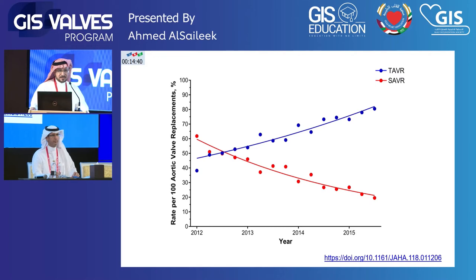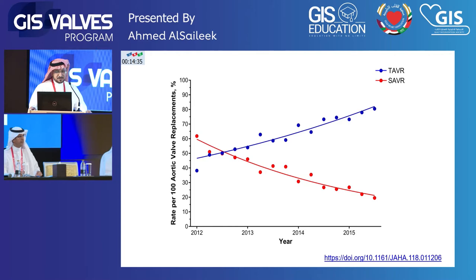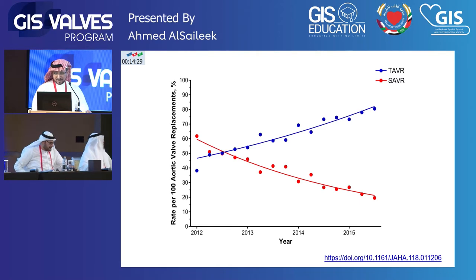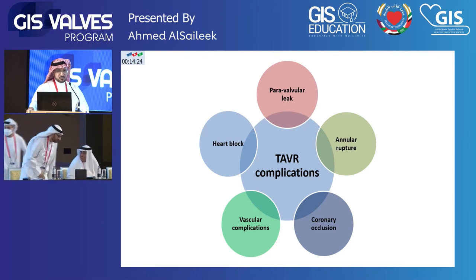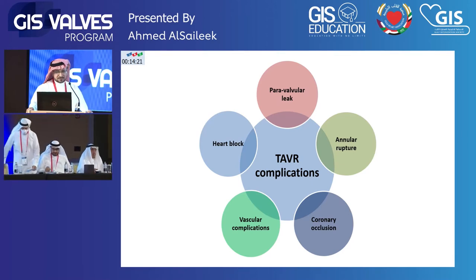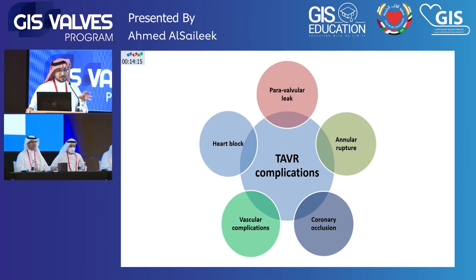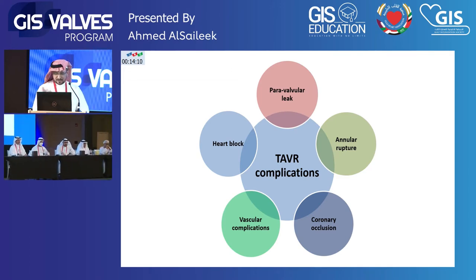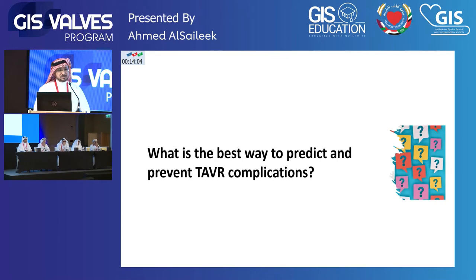There is an increasing use of transcatheter aortic valve replacement, and comparing to surgery, it is getting more and more prevalent than surgical replacement. Because it's an invasive procedure, it's expected to have some complications, either related to the landing zone — which is the aortic annulus — or related to the vascular access. Our task in imaging is: can we use imaging to predict and prevent these complications?